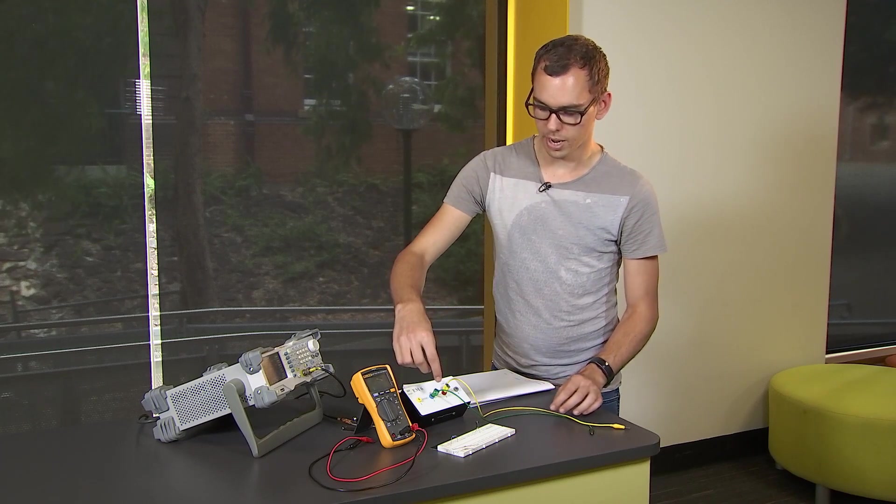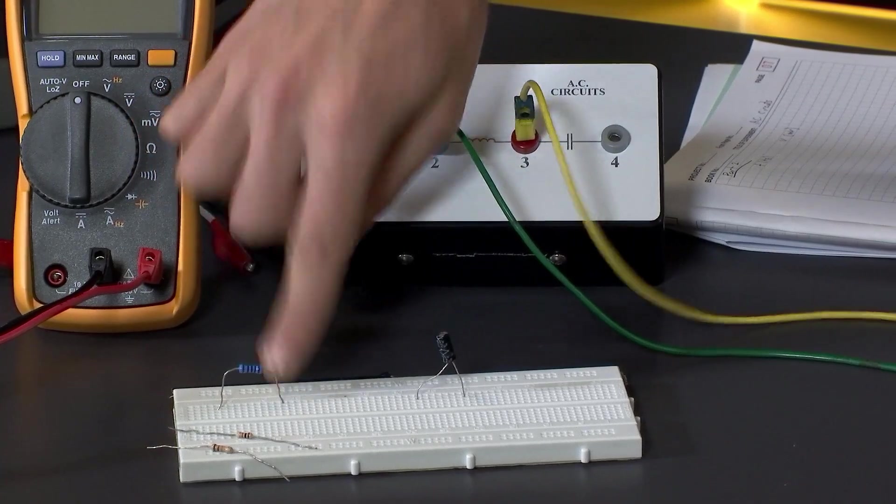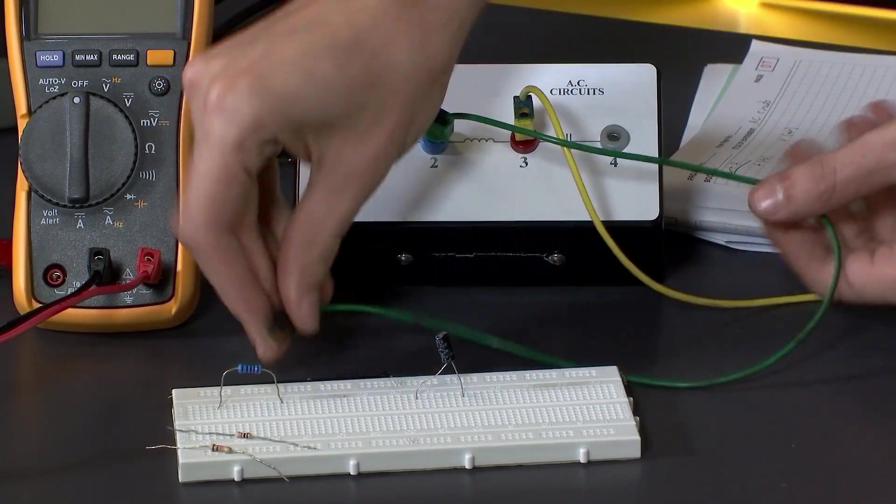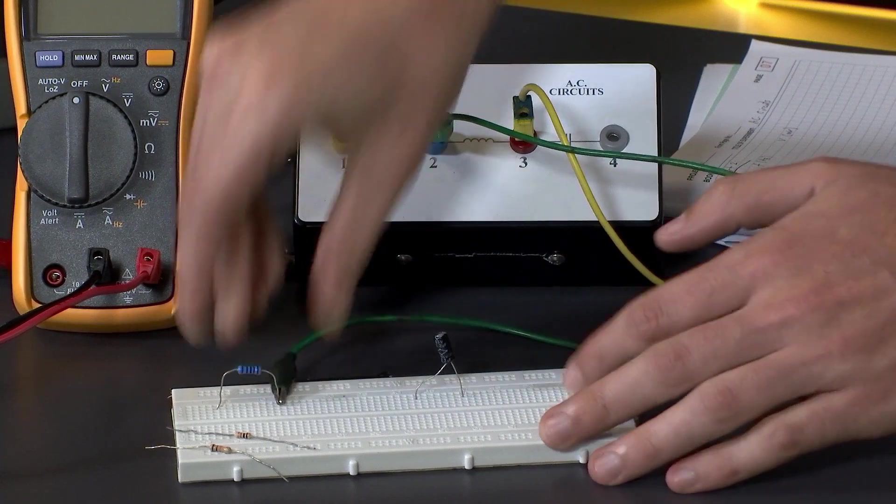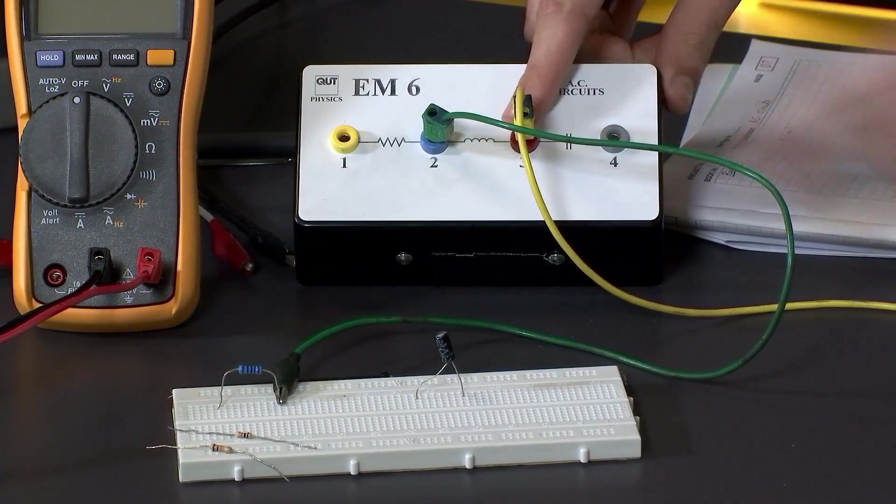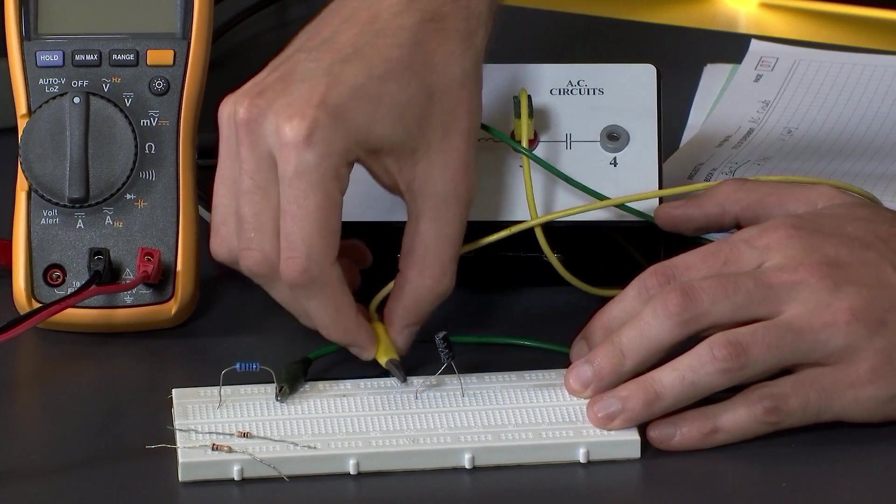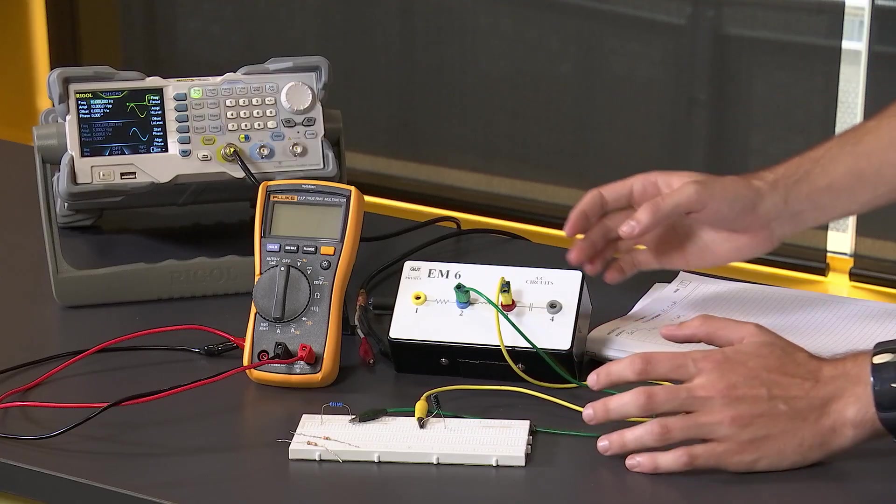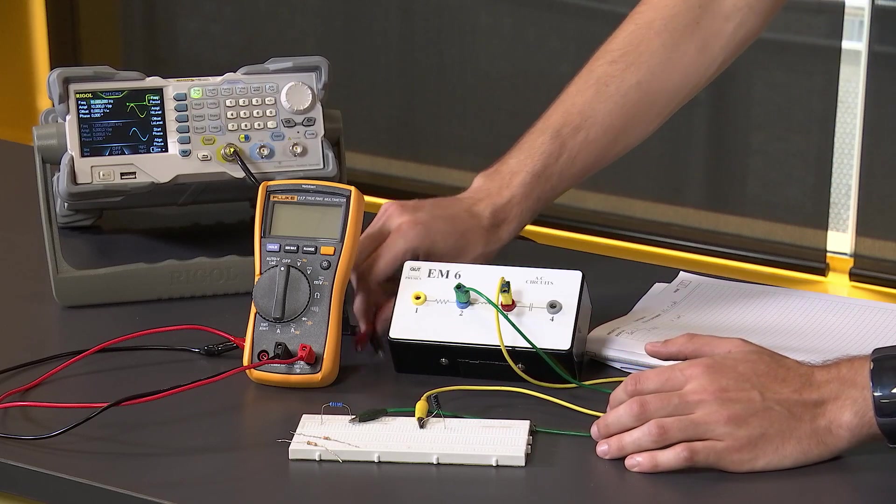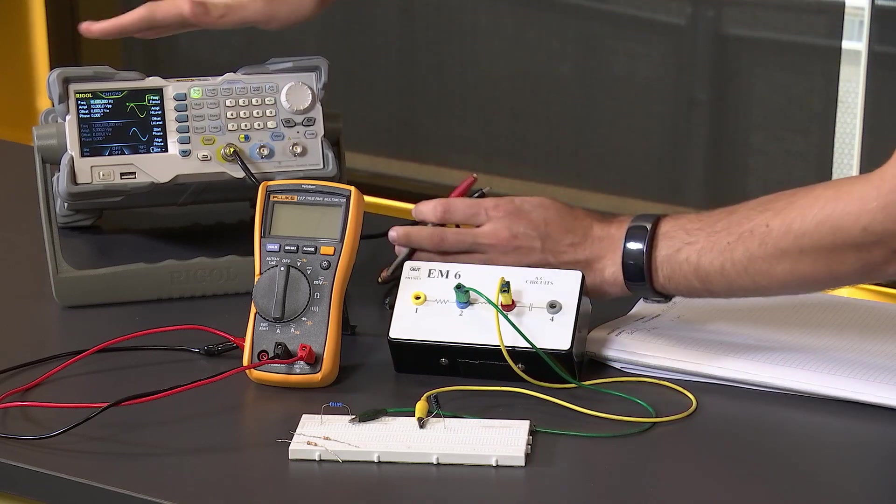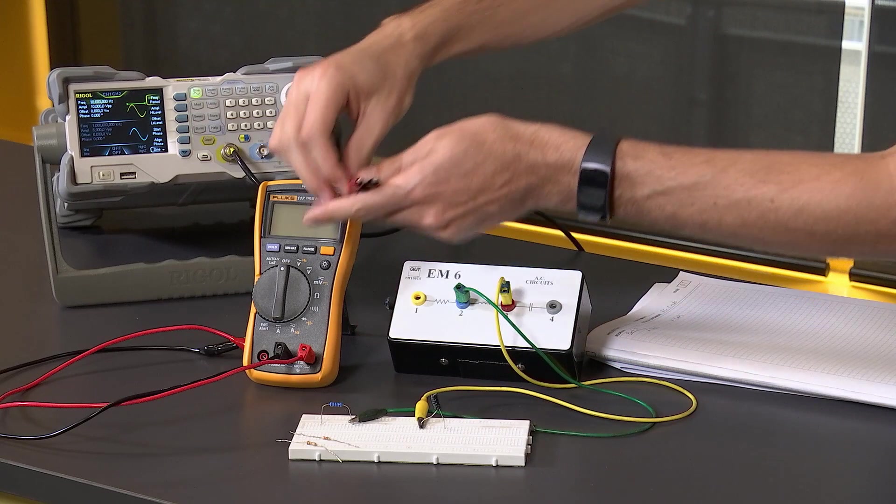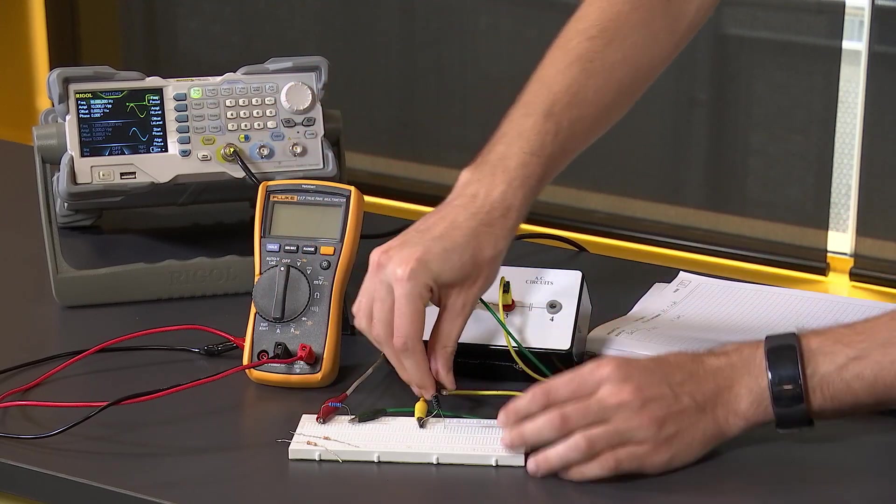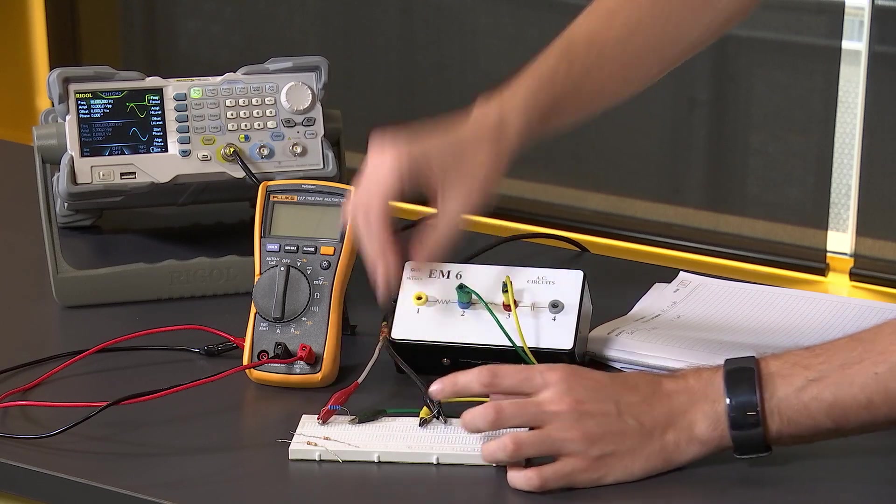First, we want to connect from the negative of our resistor to the positive of our inductor, and from the negative of the inductor to the positive of the capacitor, which is the longer pin. Then finally, I'm going to connect my power supply, which is the signal generator, across the positive of the resistor and the negative of the capacitor.